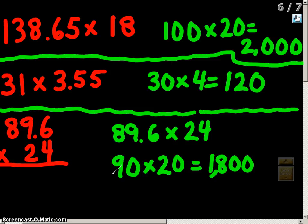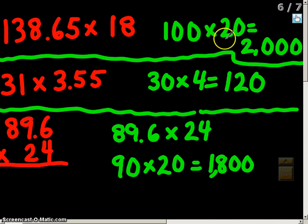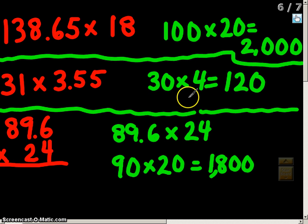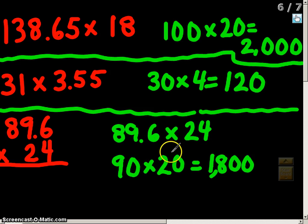Here are the answers. First: one hundred thirty-eight and sixty-five hundredths times eighteen — we round to 100 times 20, giving a total of 2,000. Next: thirty-one times three and fifty-five hundredths — we round thirty-one to thirty and three and fifty-five hundredths to four, giving a grand total of 120. Finally: eighty-nine and six tenths times twenty-four — rewritten horizontally, we round eighty-nine and six tenths to ninety and twenty-four to twenty, giving a grand total of 1,800.